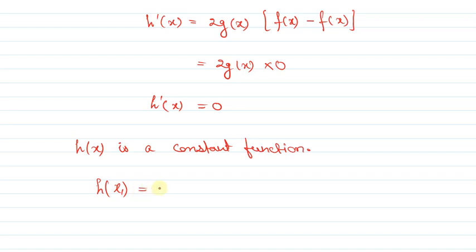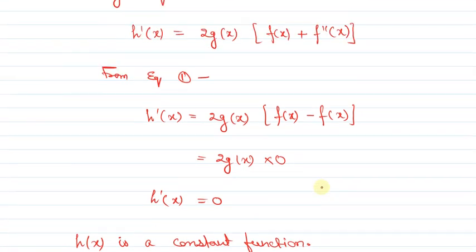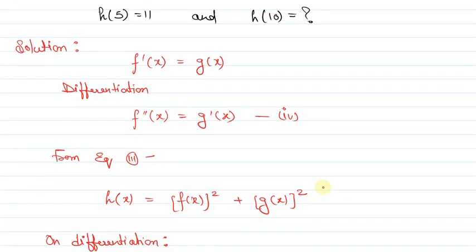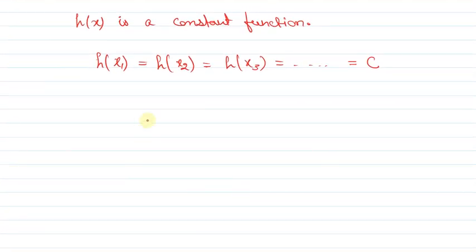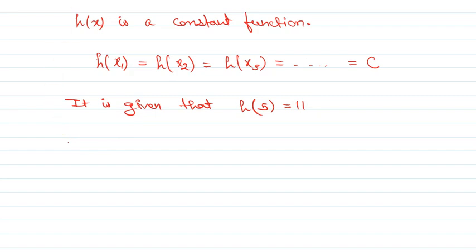Since h'(x) = 0, we have h(x₁) = h(x₂) = h(x₃) = ... = constant c. We are given h(5) = 11, so h(10) is also equal to 11. I hope you have understood this solution. Thank you.